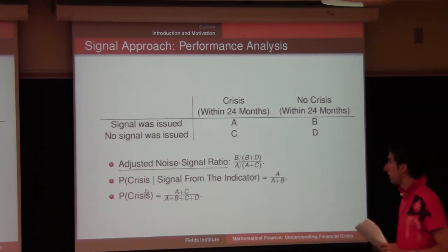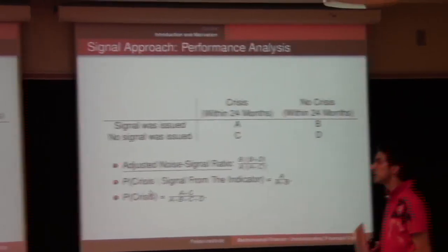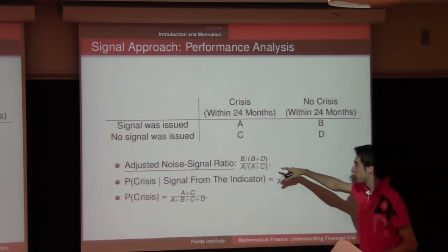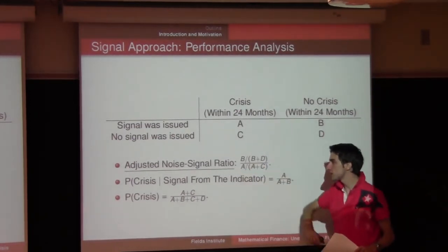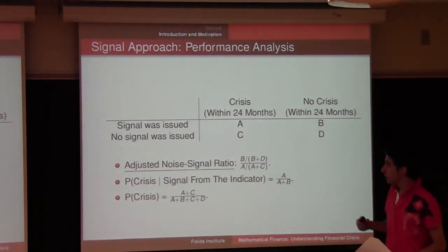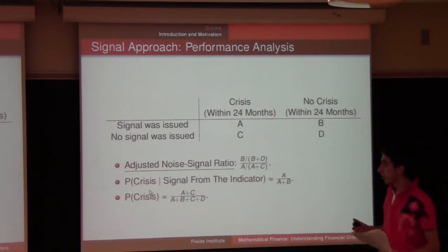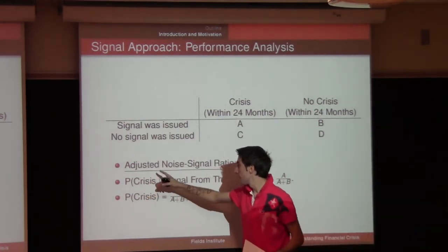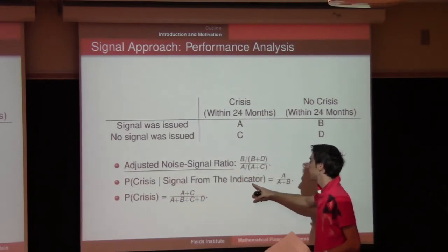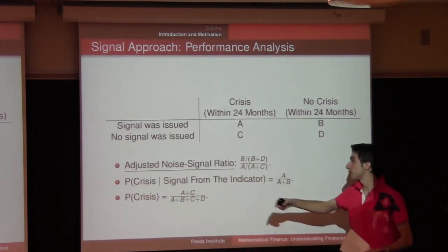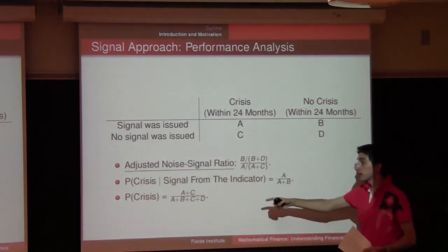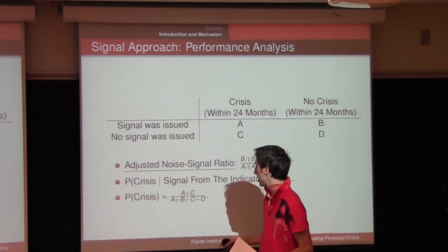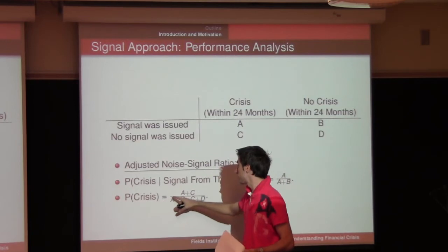With this elementary approach, you can calculate the noise-to-signal ratio and compute the conditional probability of a crisis given that a signal was issued from a specific indicator. You can also compute marginal probabilities of a crisis occurring within this window. It's a very simple but effective framework.